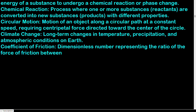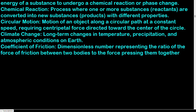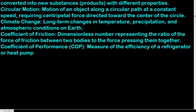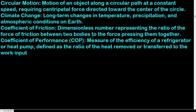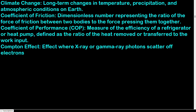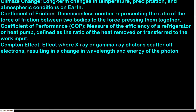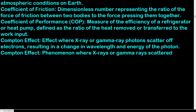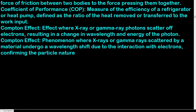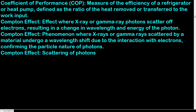Climate change: long-term changes in temperature, precipitation, and atmospheric conditions on Earth. Coefficient of friction: dimensionless number representing the ratio of the force of friction between two bodies to the force pressing them together. Coefficient of performance (COP): measure of the efficiency of a refrigerator or heat pump, defined as the ratio of heat removed or transferred to the work input. Compton effect: phenomenon where X-ray or gamma ray photons scatter off electrons, resulting in a change in wavelength and energy of the photon, confirming the particle nature of light.